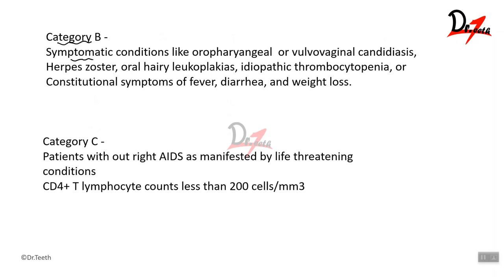In category B, patients are symptomatic with conditions like oropharyngeal or vulvovaginal candidiasis, fungal infections, viral infections like herpes zoster, oral hairy leukoplakia, blood diseases such as idiopathic thrombocytopenic purpura, or constitutional symptoms of fever, diarrhea, and weight loss. Category C patients have outright AIDS with life-threatening manifestations such as Kaposi sarcoma. The CD4 T-lymphocyte count in category C is less than 200 cells per mm³.